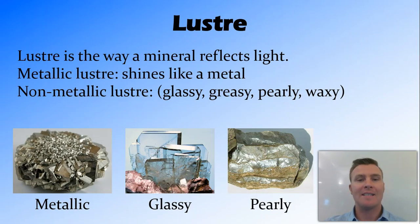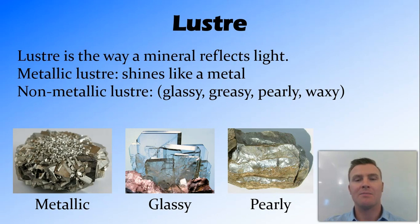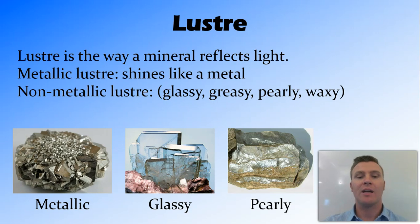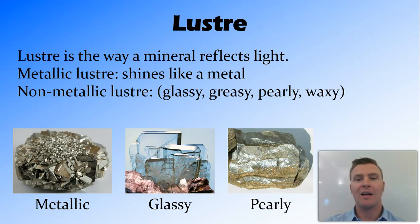The next thing we're going to look at is luster, and this is the way that the mineral reflects light. There are a lot of different types of luster and they can generally be classed as metallic luster, where a mineral will shine like a metal, or non-metallic luster. There are a few different types of non-metallic luster including glassy, where it looks like glass and you can see through it, greasy, pearly where it reflects light like a pearl, and waxy where it both looks and feels waxy to touch.